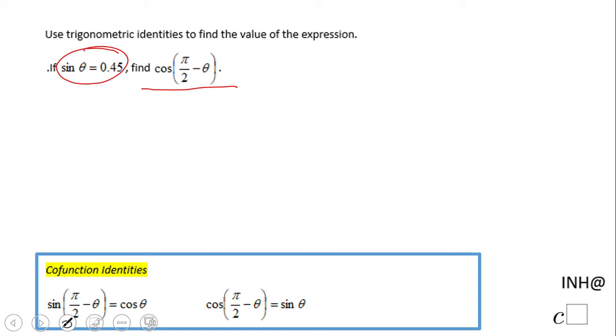So how are we going to do that? We have something that we call cofunction identity. You notice this one. This one says the cosine of pi over 2 minus theta is nothing else than sine of theta. And if you notice, sine of theta is 0.45.